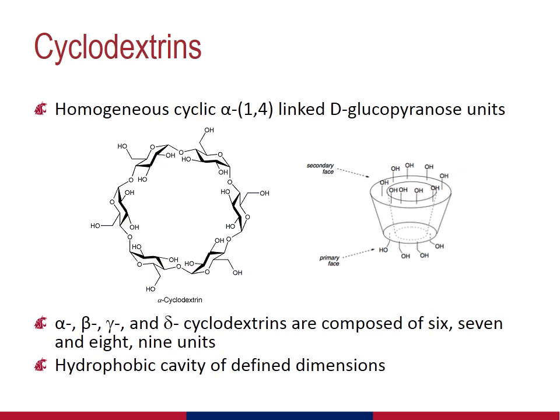Cyclodextrins are a class of excipients used to increase the bioavailability of highly hydrophobic compounds. As their name suggests, cyclodextrins are cyclic chains consisting of glucose molecules in their six-membered ring form, or glucopyranose. Each of these glucopyranose units is connected head to tail from one another at the one and four positions. The number of glucopyranose per cyclodextrin defines the type. Specifically, we use the designation alpha, beta, gamma, and delta to refer to cyclodextrins composed of six, seven, eight, or nine units of glucopyranose.